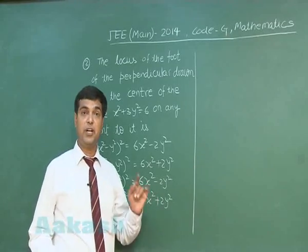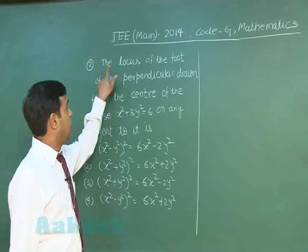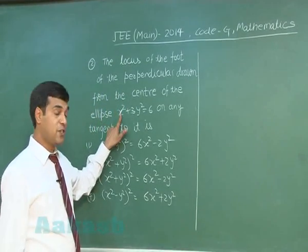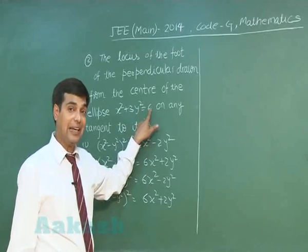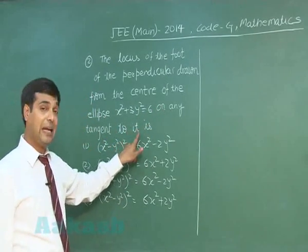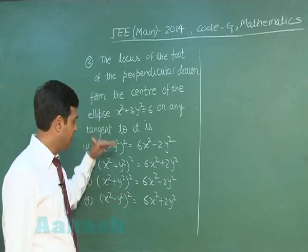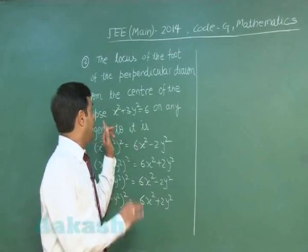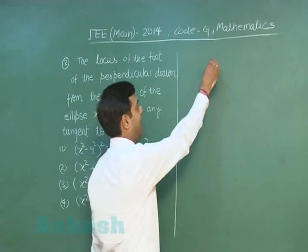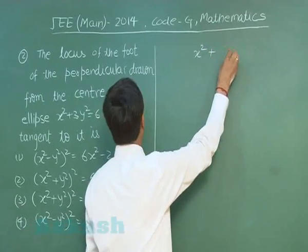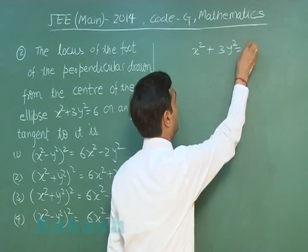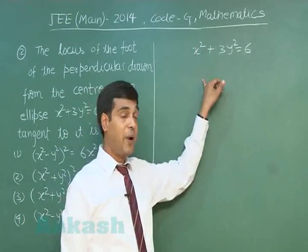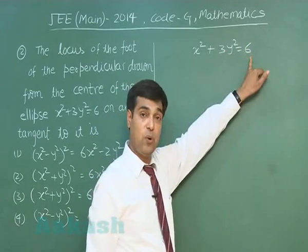Question Number 2: The locus of the foot of the perpendicular drawn from the center of the ellipse x² + 3y² = 6 on any tangent to it. We rewrite the ellipse as x²/6 + y²/2 = 1, where a² = 6 and b² = 2.